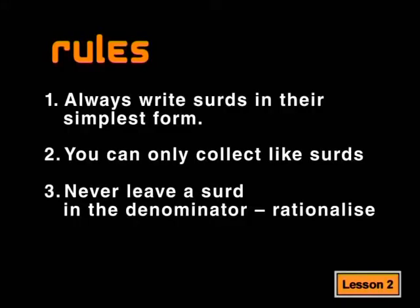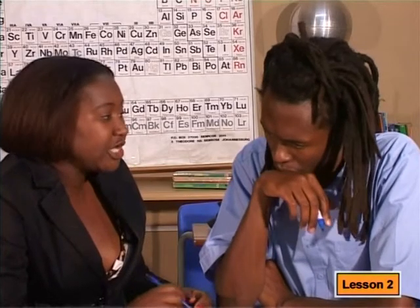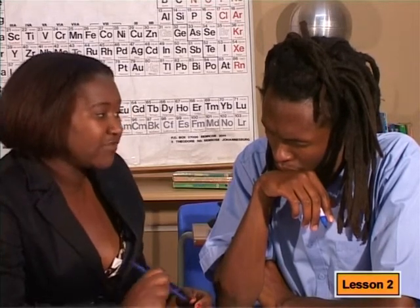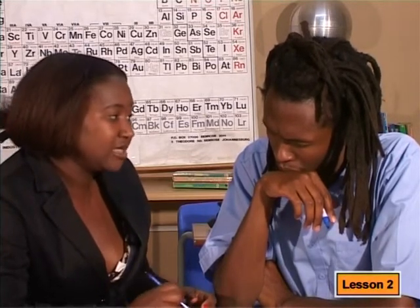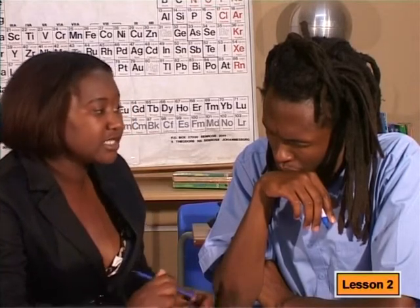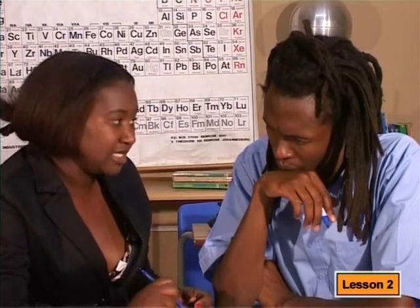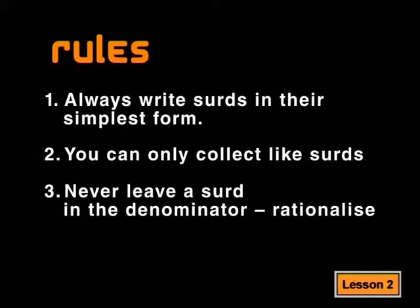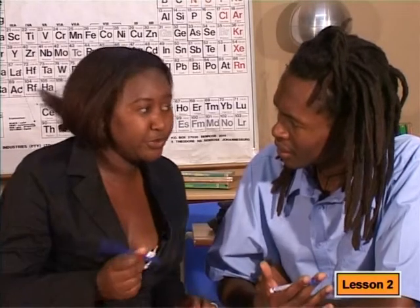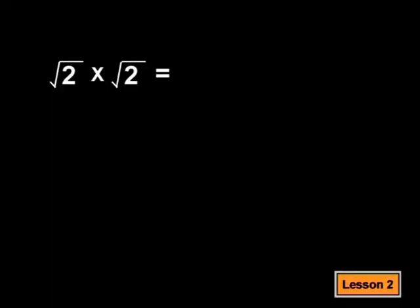Never leave a surd in the denominator. You must always rationalize the denominator. As we said, a surd is an irrational number. It's easier to work with fractions when they have a rational denominator. When we do this, we say we are rationalizing the denominator. That makes sense. But how do I do this? Here. I'll show you. Tell me something, Tabaha. What do I get when I multiply root 2 with root 2?